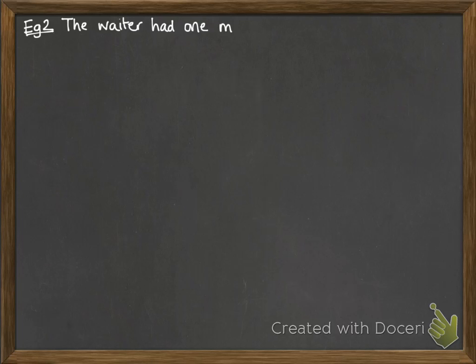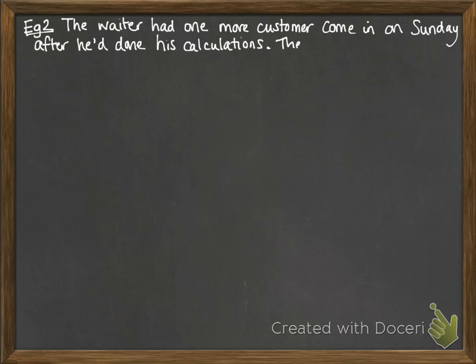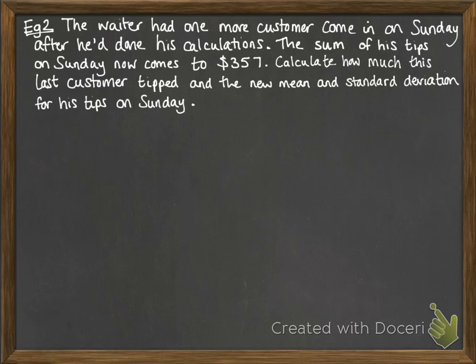Now if we have a look at this next example, sticking with the same theme, after this waiter had finished doing his calculations, he had one more customer come in on the Sunday. We then have a new sum for his tips on the Sunday of $357, and we want to calculate how much the last customer tipped and the new mean and standard deviation for his tips on the Sunday. So we have this information from before.